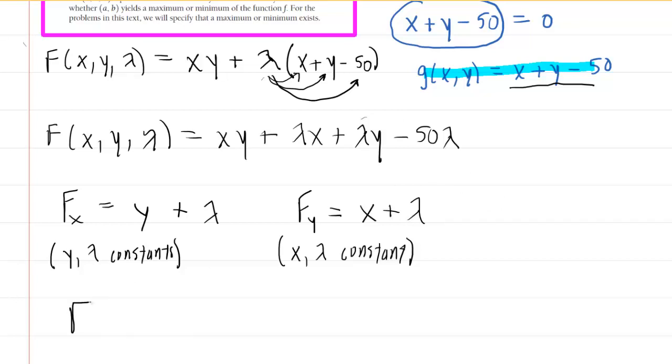And finally, we need the partial derivative with respect to lambda. This would mean that x and y are the constants. So xy, the derivative would just go to 0 because they're both constant. Lambda x, the derivative with respect to lambda would just be x. Lambda y, the derivative with respect to lambda would just be y. And then this minus 50 lambda, the derivative with respect to lambda would just be minus 50. A little hint here, your derivative of F with respect to lambda should actually just end up equaling your little g function. Recall little g was x plus y minus 50, and that's indeed what we have. So let's just underline the partial derivatives that we've obtained so far.